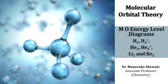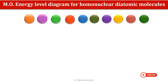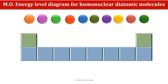Hello everyone, welcome to another video on molecular orbital theory. In this video we will learn how to construct the MO energy level diagrams for some homonuclear diatomic molecules. The homonuclear diatomic molecules are made up of two atoms of the same element. The molecules which we will study are from the elements of the first row, that is hydrogen and helium.